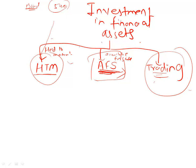In terms of what instruments go where: HTM can only hold bonds. AFS can hold bonds as well as equity. Trading can also hold bonds as well as equity, though we typically do not put bonds into the trading category.